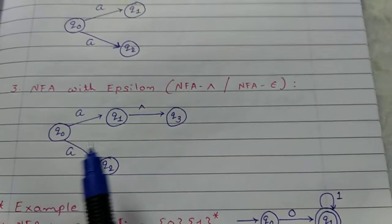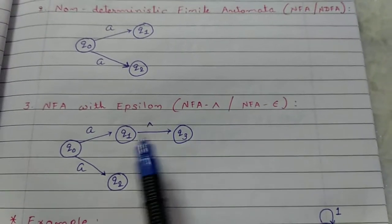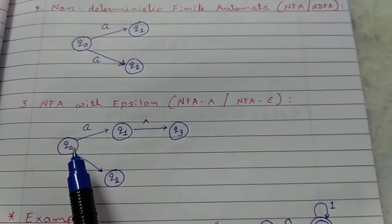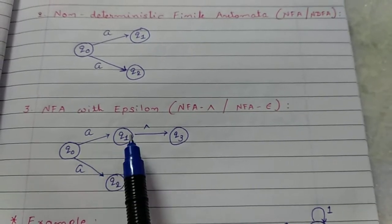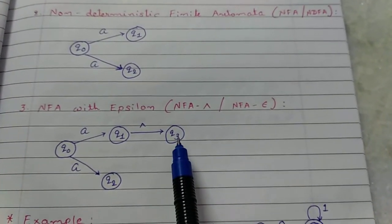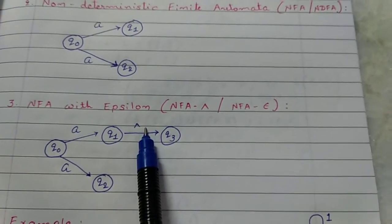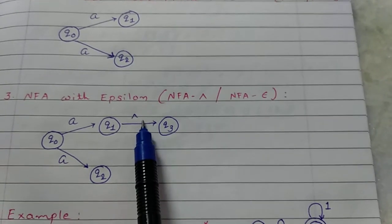In NFA with Epsilon, you have an Epsilon state. You are at Q0. Via A, you reach at Q1 or Q2. You can also reach at Q3 with the help of Epsilon, Epsilon transition.